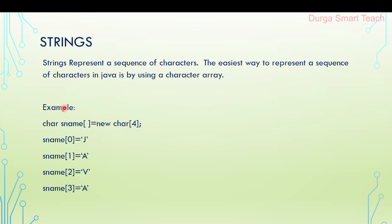If you want to represent a character array, the syntax is: the data type is char, and the array name — for example, 's_name' — is equals to new char of four. So here four memory locations are allocated; you can store four characters. So s_name[0] equals j, s_name[1] equals a, s_name[2] equals v, s_name[3] equals a.